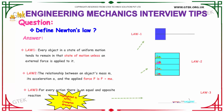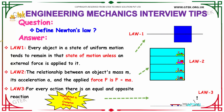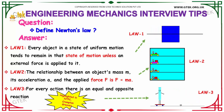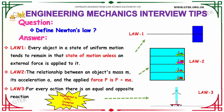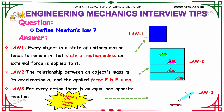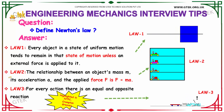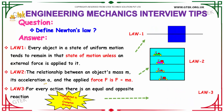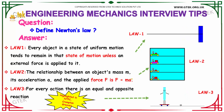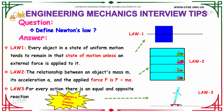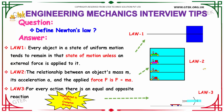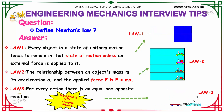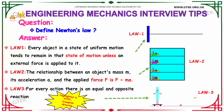Next question: define Newton's laws. The first law is: every object in a state of uniform motion tends to remain in that state of motion unless an external force is applied to it. The second law emphasizes the relationship between an object's mass m and its acceleration a, with the applied force calculated as F = m × a, that is mass into acceleration. The third law is: for every action, there is an equal and opposite reaction.